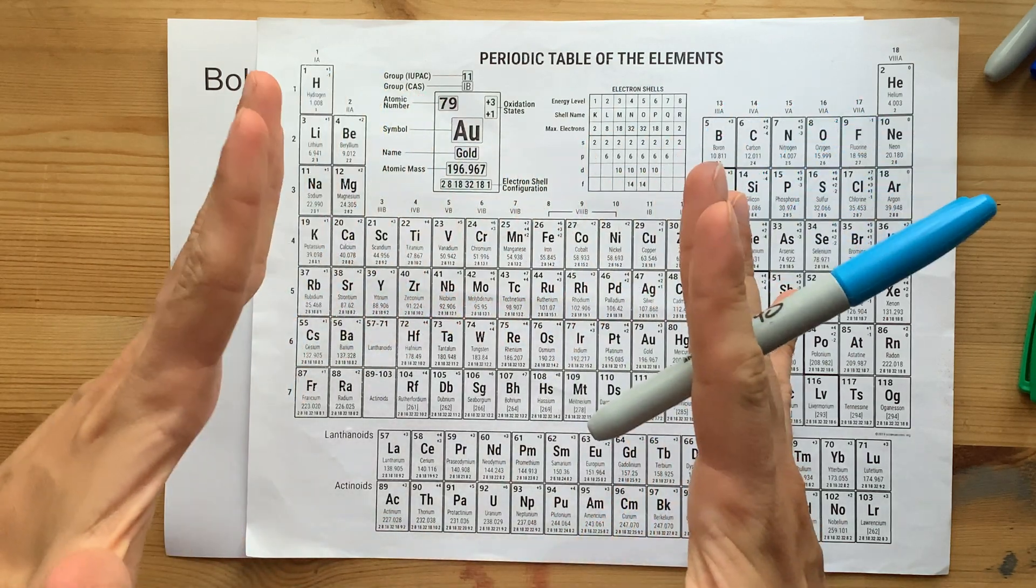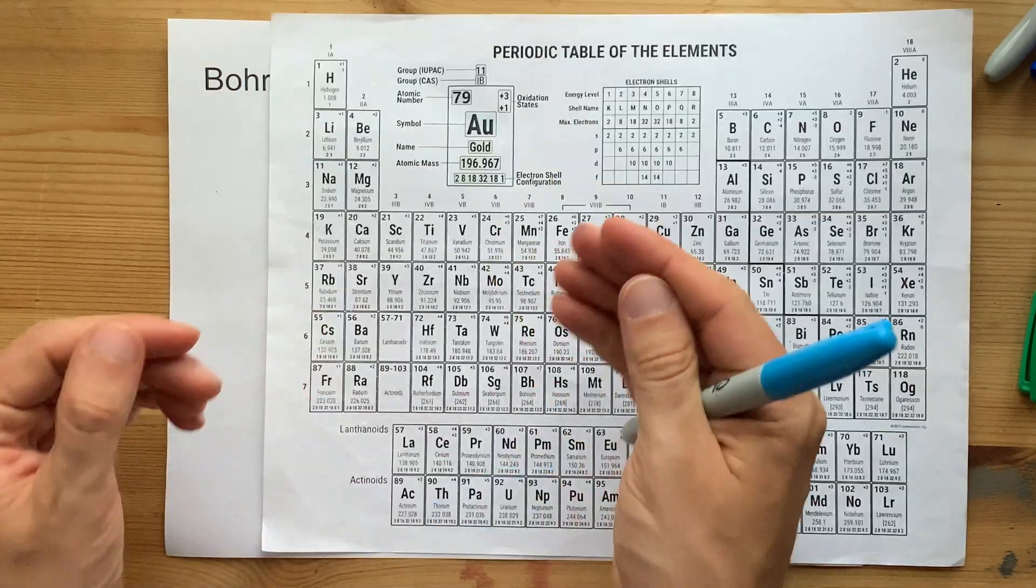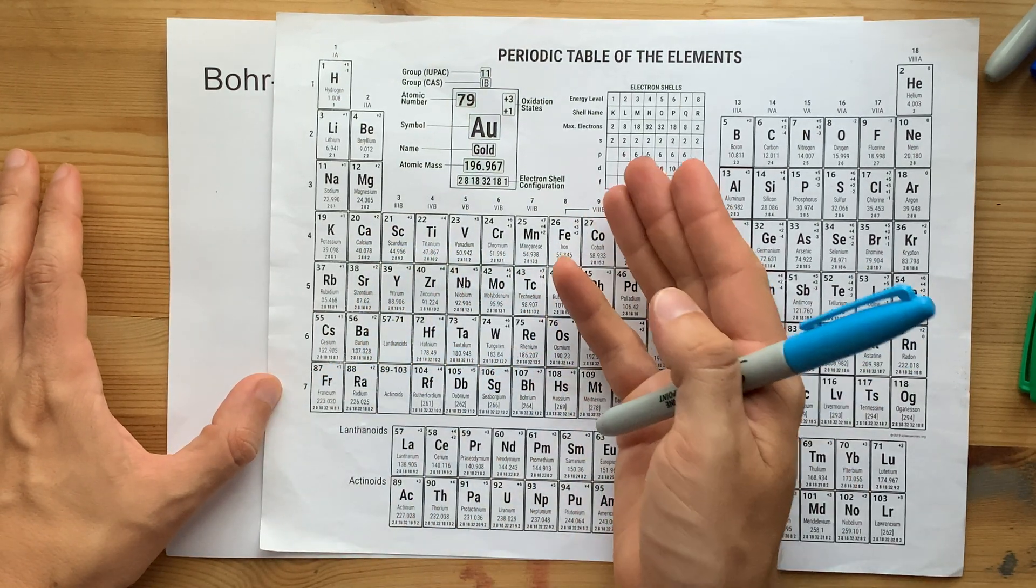First shell, second shell, third shell, fourth shell. Once you put two electrons in the fourth shell, you actually have to backtrack and go to the third shell.